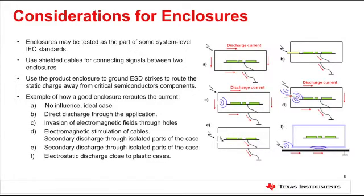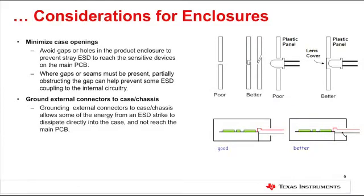Some suggestions for routing static charges away from the active circuitry are illustrated on the diagrams on the screen. In some applications, simple things such as grounding the external connector to the chassis can considerably improve the overall ESD performance, because it allows some of the energy from the ESD strike to dissipate directly to the case and not reach the main PCB. You can also minimize the case openings or number of holes in the product enclosures to prevent ESD strikes from reaching the active circuitry.